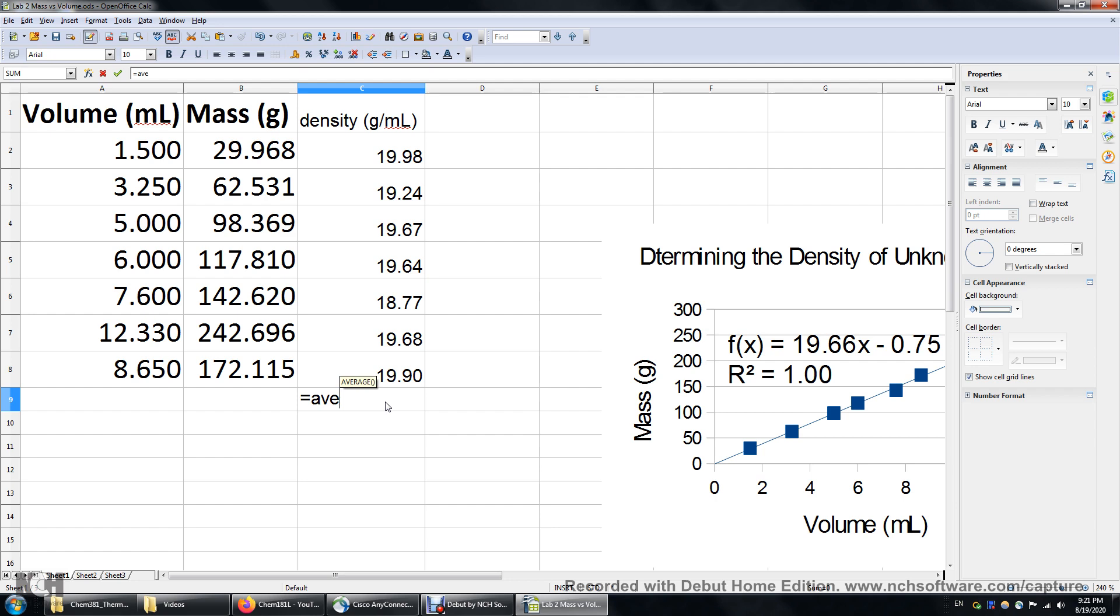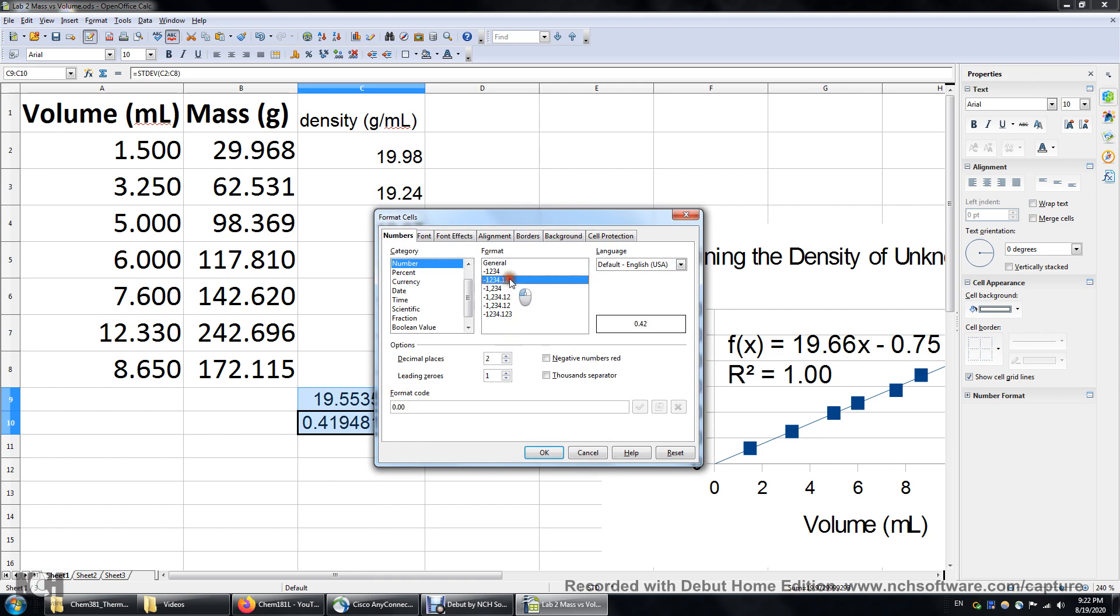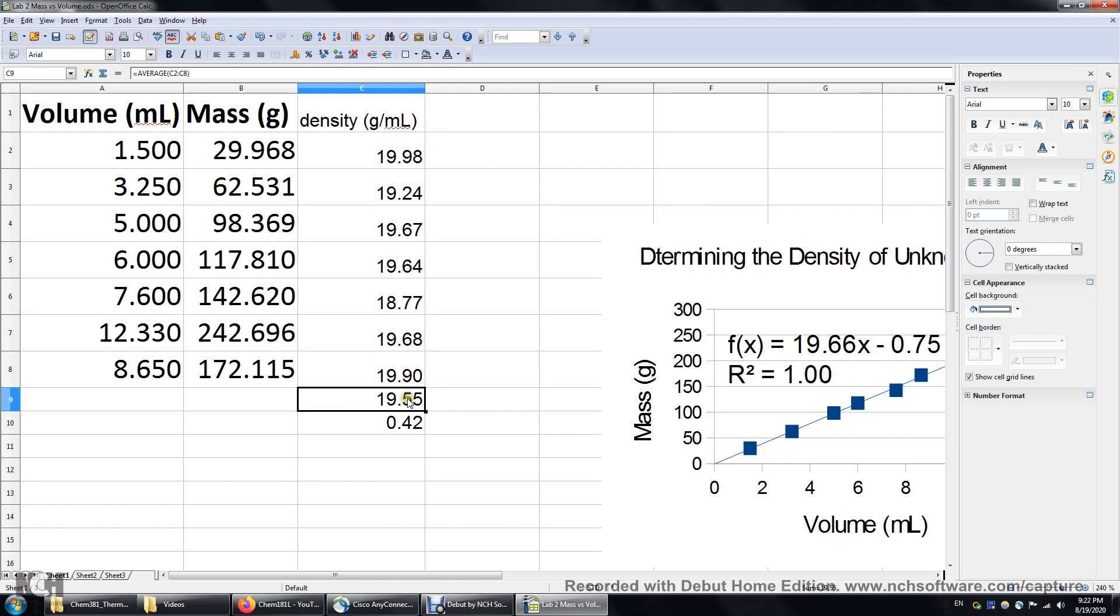Now I will get the average of the seven values. The equation is average. So type equal sign and then average and then select all the data. So this is average. And now I'm going to get the standard deviation: equals STDEV, standard deviation. Again, I'm going to select all the data here. So now I will format these two numbers. Format cells, number, two sig figures. So this number is the average. I'm going to label this. And this number is standard deviation.